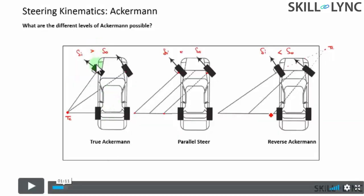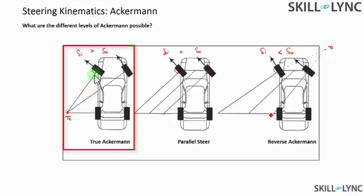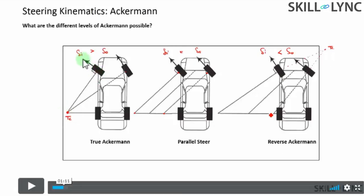The idea is quite simple. You draw perpendiculars from all the tires and you basically see where they are intersecting. In case of true Ackermann or 100% Ackermann, all these lines are going to basically intersect at a point which is what you call as the turn center — the center about which your vehicle is going to turn. In this case, the angle that your inner tire makes is much greater than the angle that your outer tire makes, and that is easy to see from this particular picture.